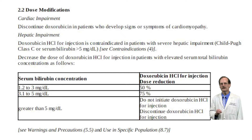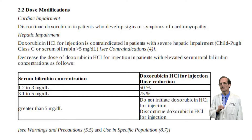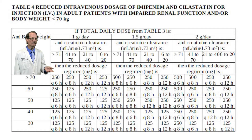The package insert for doxorubicin tells us to monitor the patient's total bilirubin and adjust the dose in patients with hepatic dysfunction. For renally cleared drugs like the antibiotic imipenem, dosing adjustments are based on estimated creatinine clearance.